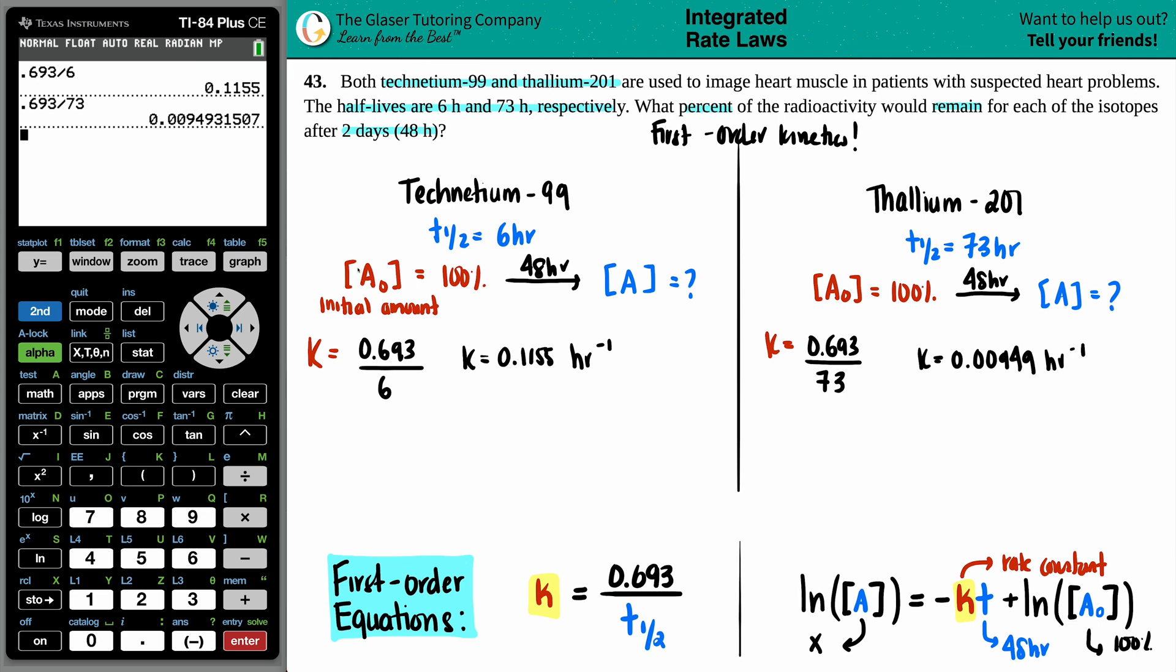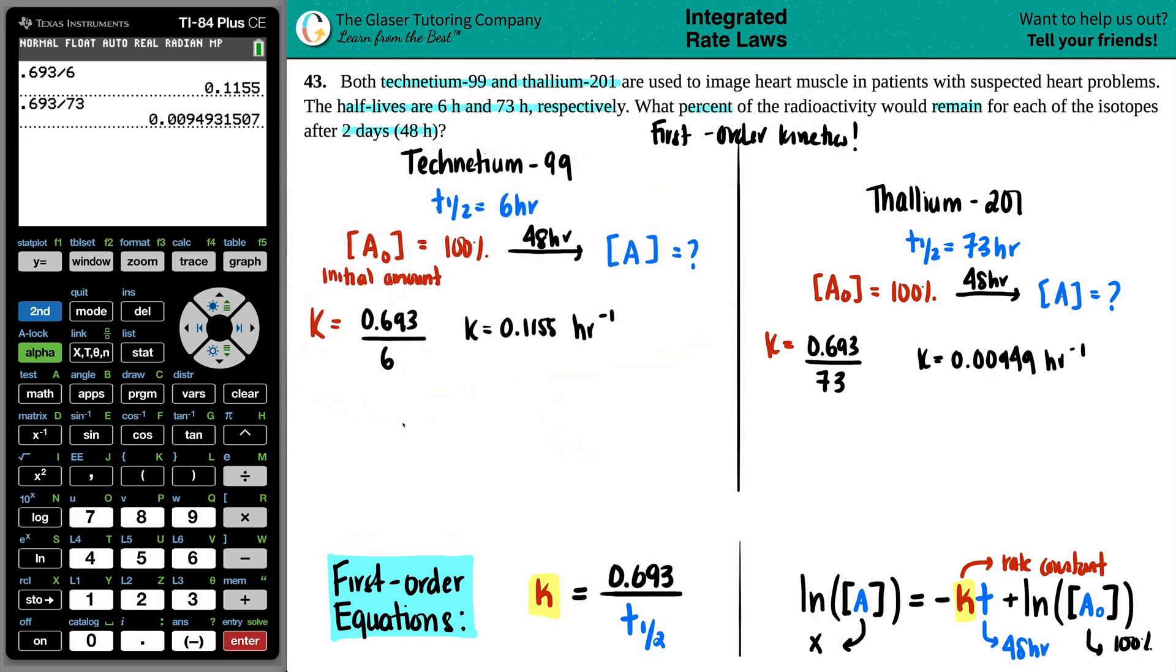So now let's do one at a time. Maybe let's see. Can I pull this up? Oh boy. Let me see. There we go. So I'm just going to copy and put it into here, right? Ln of x equals negative our K value, which we just found out, 0.1155 times the time, which was 48 hours, plus the Ln of 100.